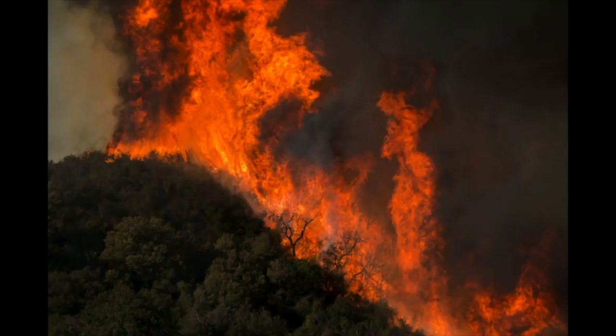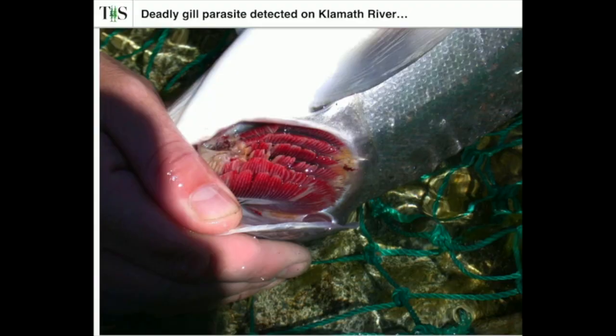Much like wildfires affect human lungs, the algae blooms affect the gills of salmon. This can potentially cause many diseases such as one called ick. This disease killed a lot of salmon in 2002.